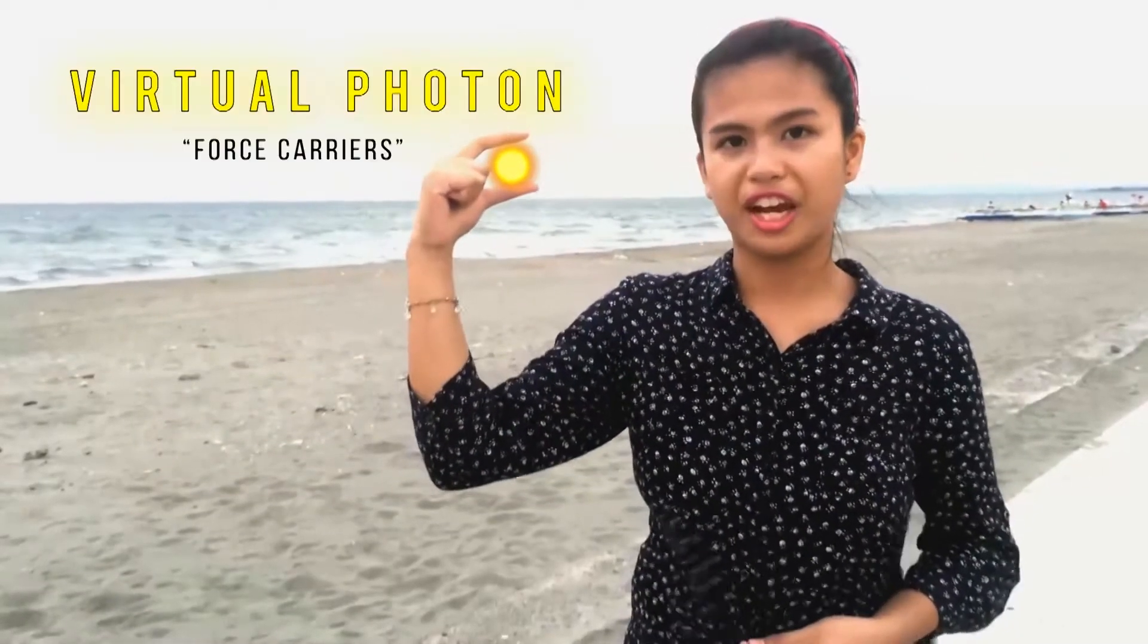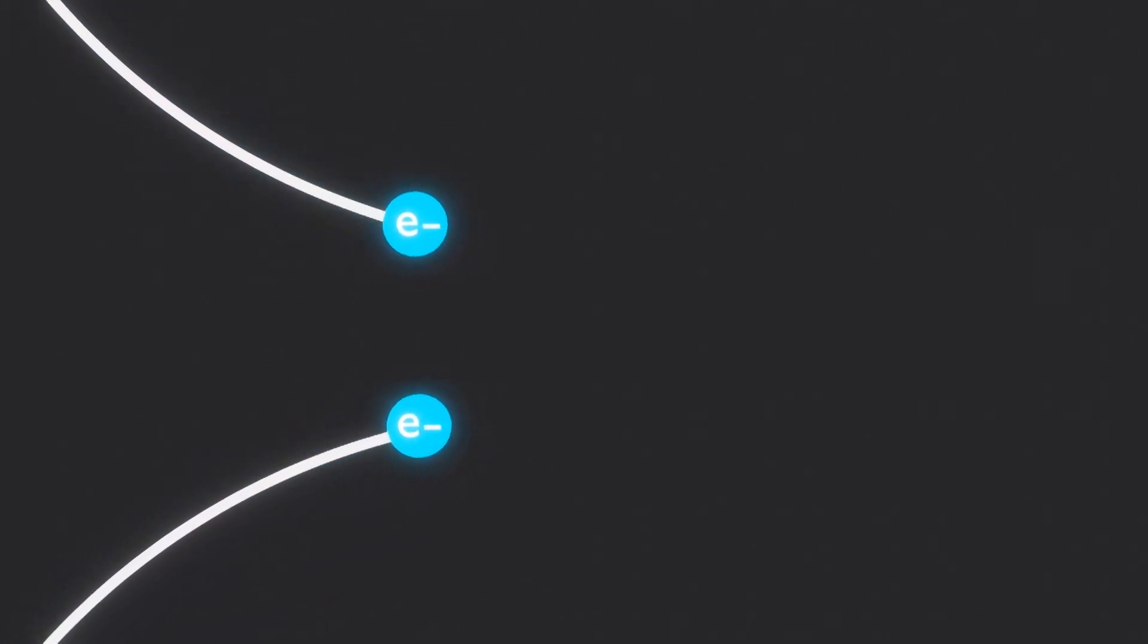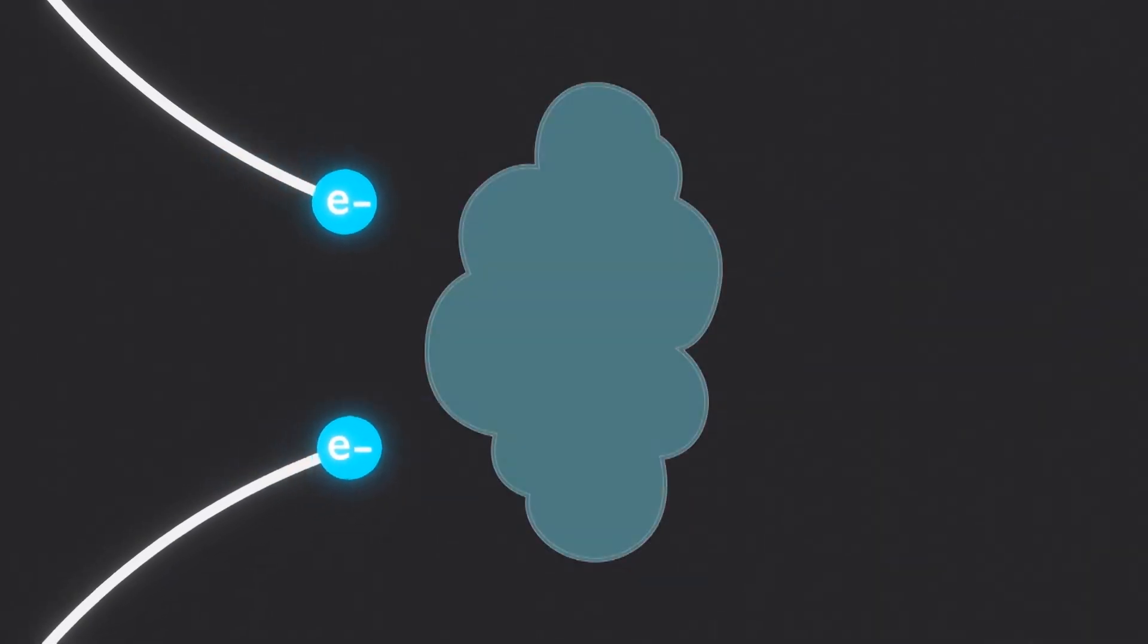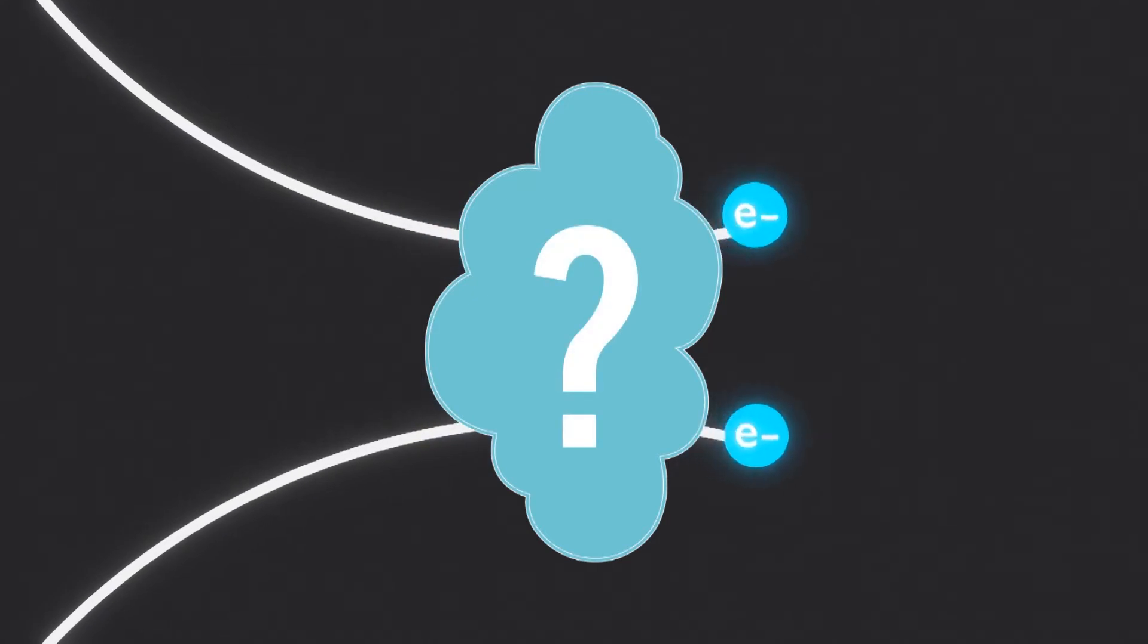Virtual photons are force carriers cloaked from observation to not violate conservation laws. Let's say we have two electrons approaching each other. By exchanging these virtual photons, we see the changes in the electron's speed and direction. What we don't see is how the interaction occurred.